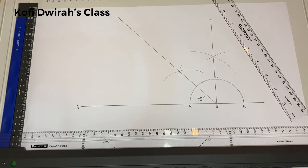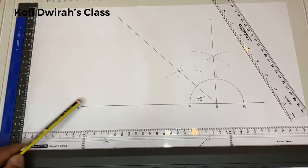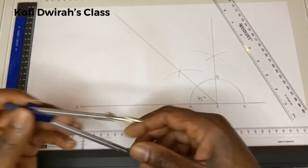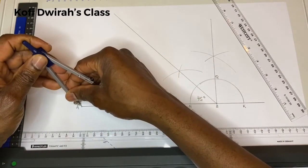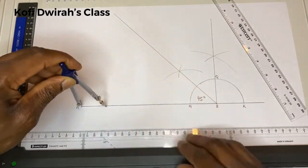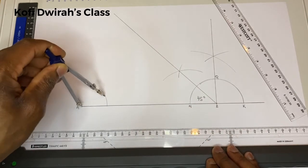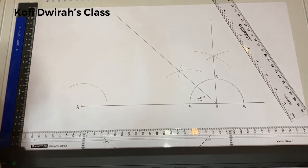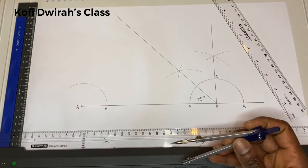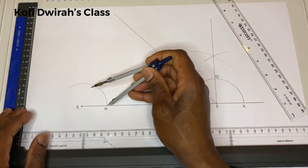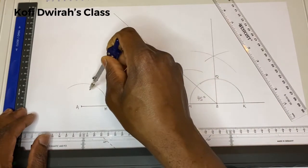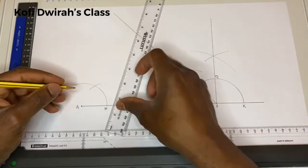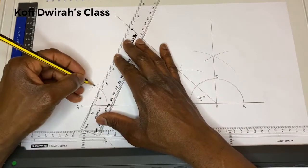Angle BAC is 60 degrees, so we are going to construct a 60 degree angle at point A. With your compass at point A, you draw an arc and name the intersection point H. At point H, you draw another arc to get your 60 degree angle, then draw your line from A through that intersection.